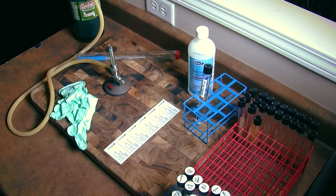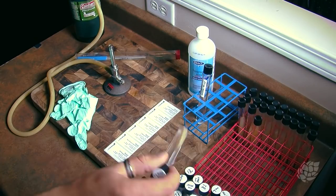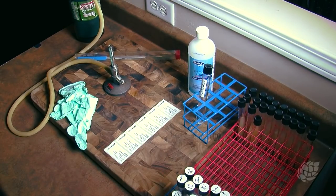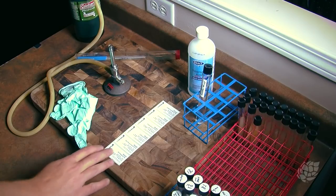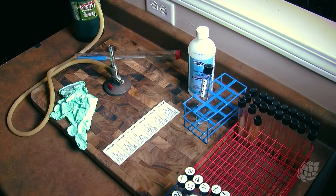What you're going to need is some yeast slants that you already have yeast growing on, some fresh agar slants, some alcohol, an inoculation loop, a burner, some gloves and obviously something to label your test tubes with.